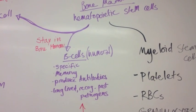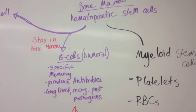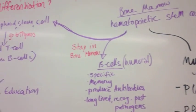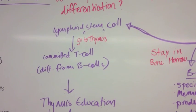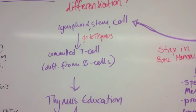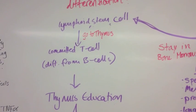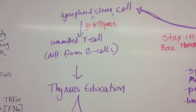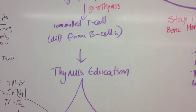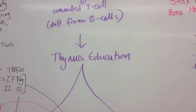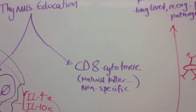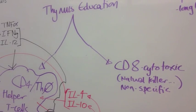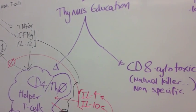Alternatively, the hematopoietic stem cells will move into the thymus as lymphoid stem cells, and they become committed T cells. They get their thymus education and then will become either CD8 or CD4 cells.